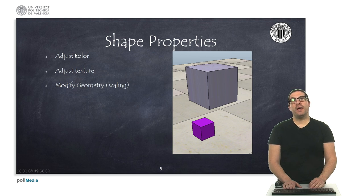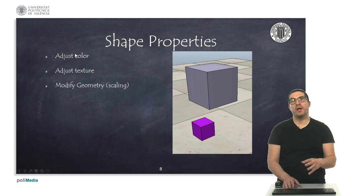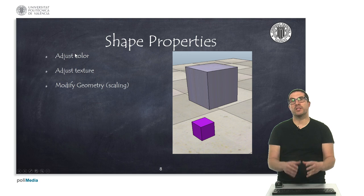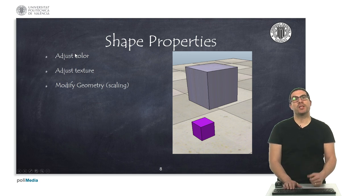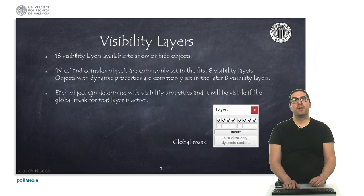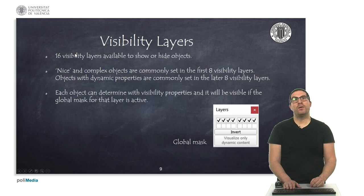So also, objects have some shape properties, especially related with the geometry, and we can modify for instance the scale of an object, so we can scale it and make it bigger or smaller, and also we can adjust the color and even provide a texture to an object to modify its appearance.